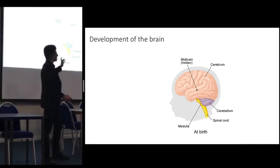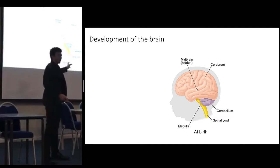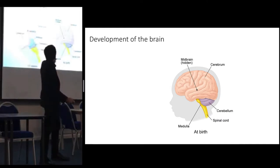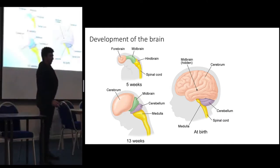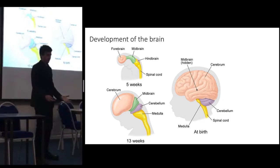You would be familiar with the brain of a child at birth. Now compare that to the brains of fetuses at 5 weeks and 13 weeks of gestation — they look like completely alien structures.